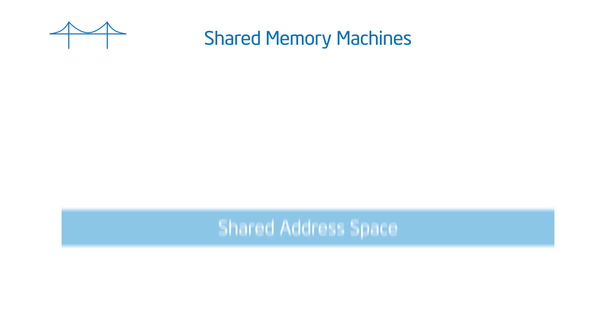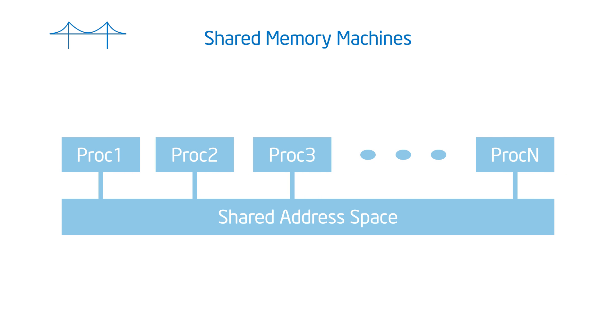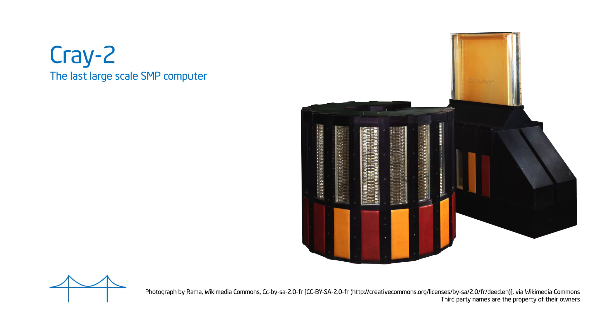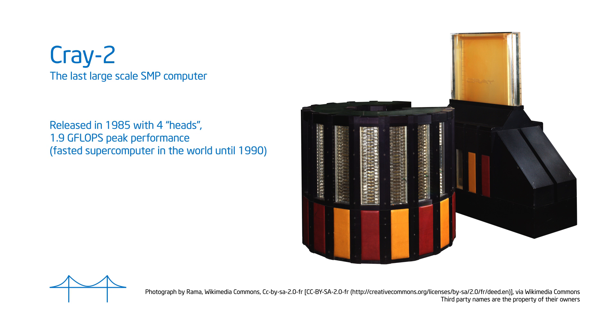The way we draw the picture: you've got this memory domain, you've got this network that connects processors, and it all looks nice and friendly with equal access time to everything. Now, the last true SMP machine I'm personally aware of was the Cray 2, built in the late 80s. It was indeed the case that for each one of the processing blocks — which they called a head — on the Cray 2, you had equal access time to the memory.